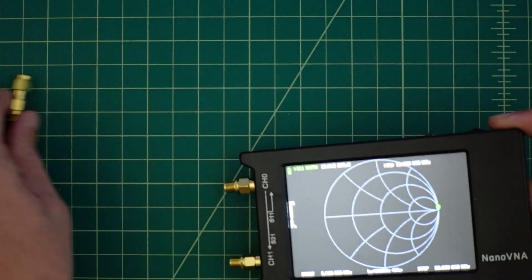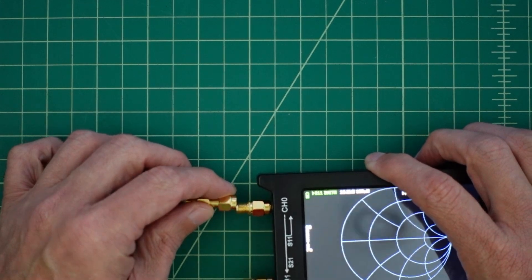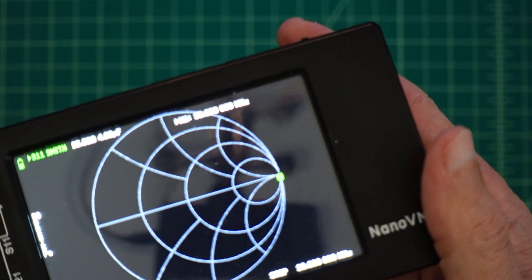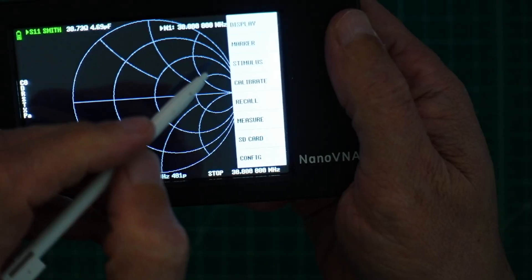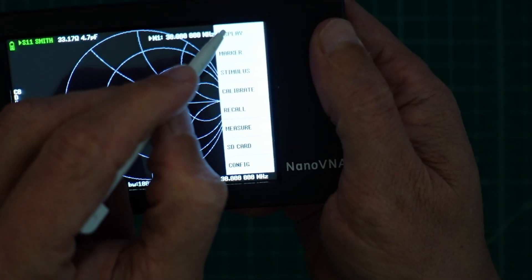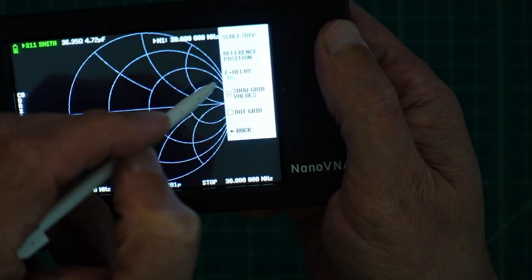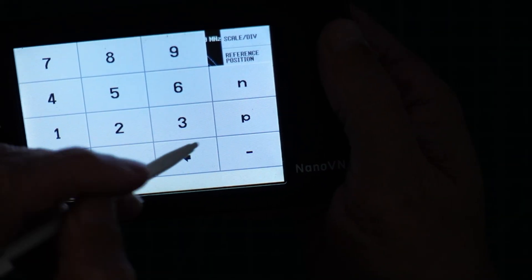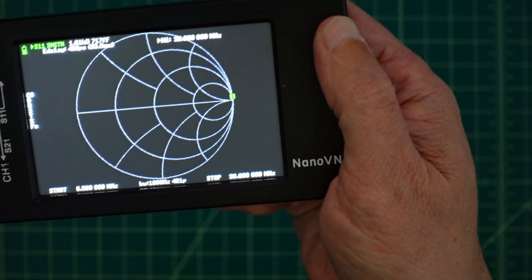Now when I take the low rent probes that I built and I connect these, something's going to happen and you can see here my marker has moved down below the point of resonance. So I go into my menu, I go to display, I go to scale, and then in scale I go to e-delay. I've already done this so I know it's 400 picoseconds and you can see that it has moved back to its original spot.